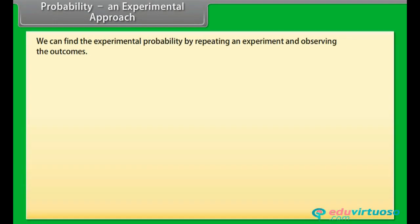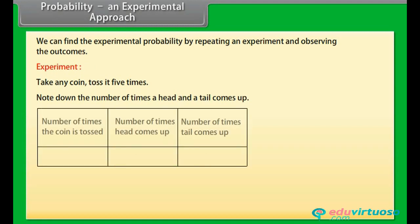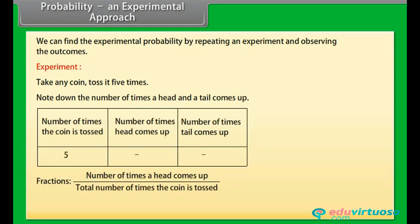We can find the experimental probability by repeating an experiment and observing the outcomes. Let's do an experiment. Take any coin, toss it 5 times. Note down the number of times a head and a tail come up and fill the given table. Then write the fractions. Number of times a head comes up upon total number of times the coin is tossed, and number of times a tail comes up upon total number of times the coin is tossed.